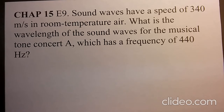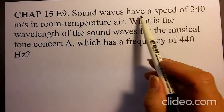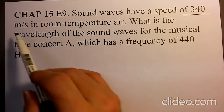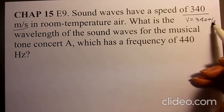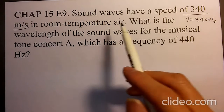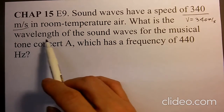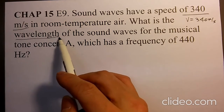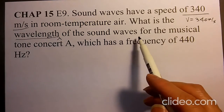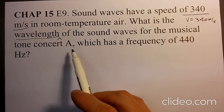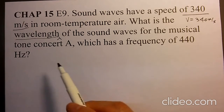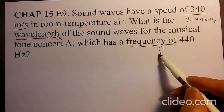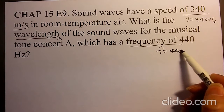Let's solve chapter 15 E9. Sound waves have a speed of V equals 340 meters per second in room temperature air. What is the wavelength of sound waves for musical tone concert A, which has a frequency of 440 hertz? Frequency F equals 440 hertz.